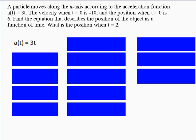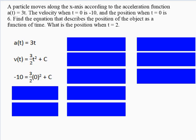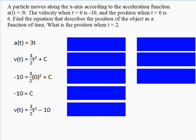We integrate the acceleration to get the velocity function: v(t) = (3/2)t² + C. We know when t = 0, velocity is negative 10, so we plug in: v(0) = -10. This gives C = -10. Note that C takes this value because our initial condition is at time 0; if given a value at another time, we'd plug that in instead. So our velocity function is v(t) = (3/2)t² - 10.